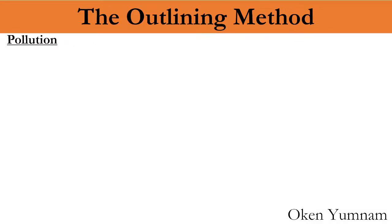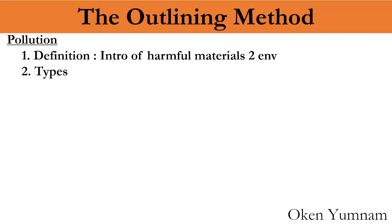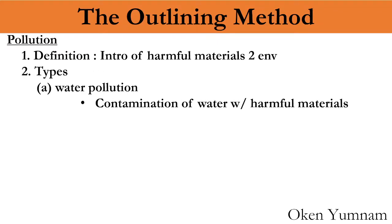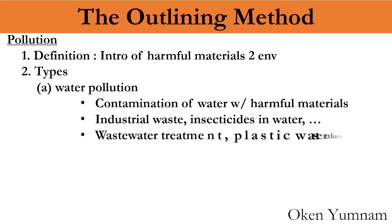Now let's come to an outlining method example. Suppose the topic is pollution. Definition: Here you can have the introduction - pollution is the introduction of harmful materials to the environment. Types: you can write water pollution, contamination of water with harmful materials, industrial waste, insecticides in water, wastewater treatment, plastic waste reduction like this you can take the notes.